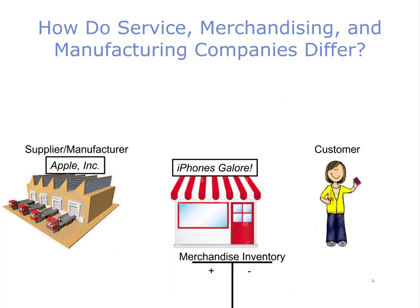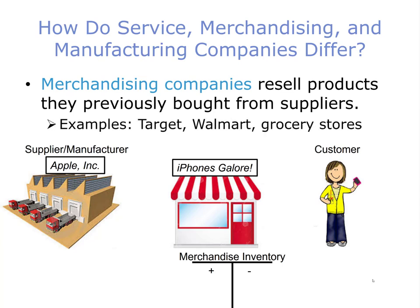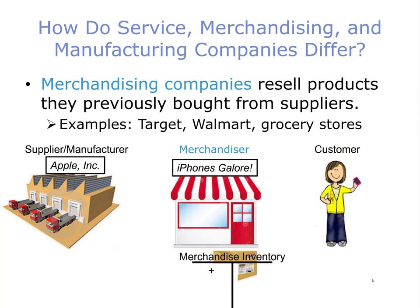Now let's talk about merchandising companies. Merchandising companies resell products they previously bought from suppliers. Examples include Target, Walmart, and grocery stores like Safeway. The merchandiser here is iPhones Galore. They buy iPhones from Apple, the manufacturer of the merchandise. When they buy the merchandise, this increases their merchandise inventory account, which is an asset account on their balance sheet. Then, when the customer buys the merchandise — the iPhone — the inventory account is reduced and the customer takes possession of the merchandise. So it's important to understand the flow goes from manufacturer to merchandiser to customer.